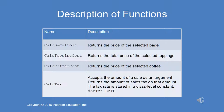Next, we'll discuss the functions that you will code. Calc bagel cost will return the price of the bagel. Calc topping cost will return the total price of the selected toppings. Calc coffee cost will return the price of the coffee that's selected. And calc tax accepts the amount of a sale as an argument and returns the amount of sales tax on that amount.